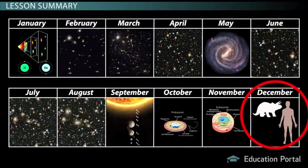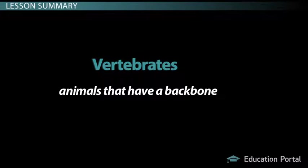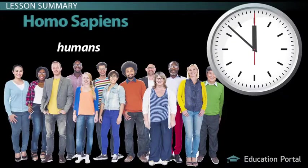In mid-December, the first vertebrates, animals that have a backbone, evolve on Earth. At around 11:52 p.m. on New Year's Eve, Homo sapiens, or humans, appear.